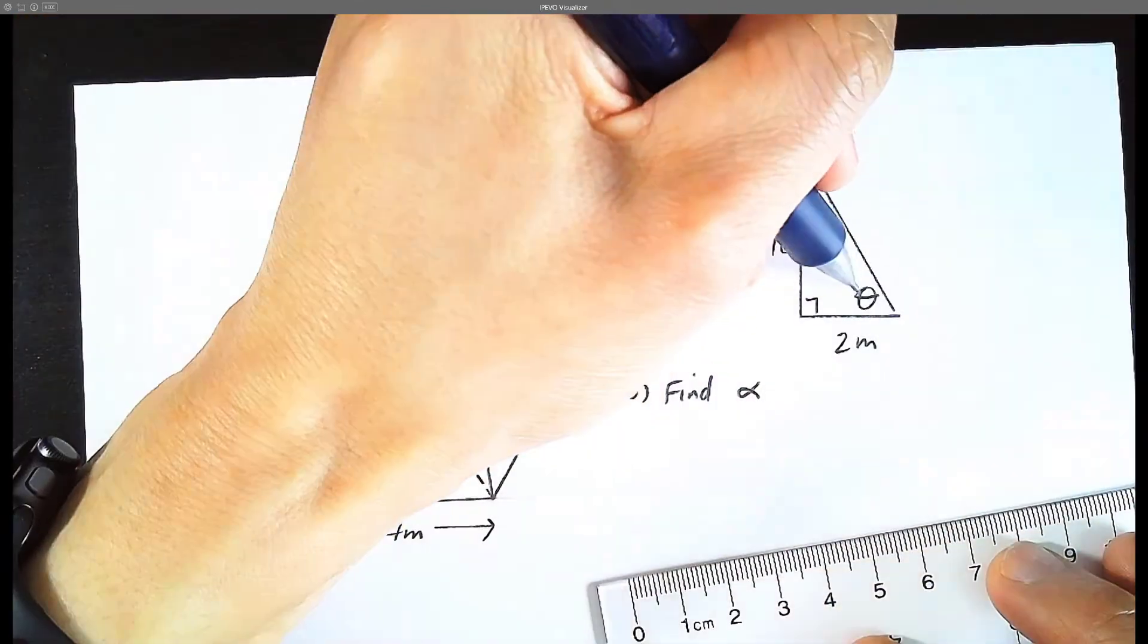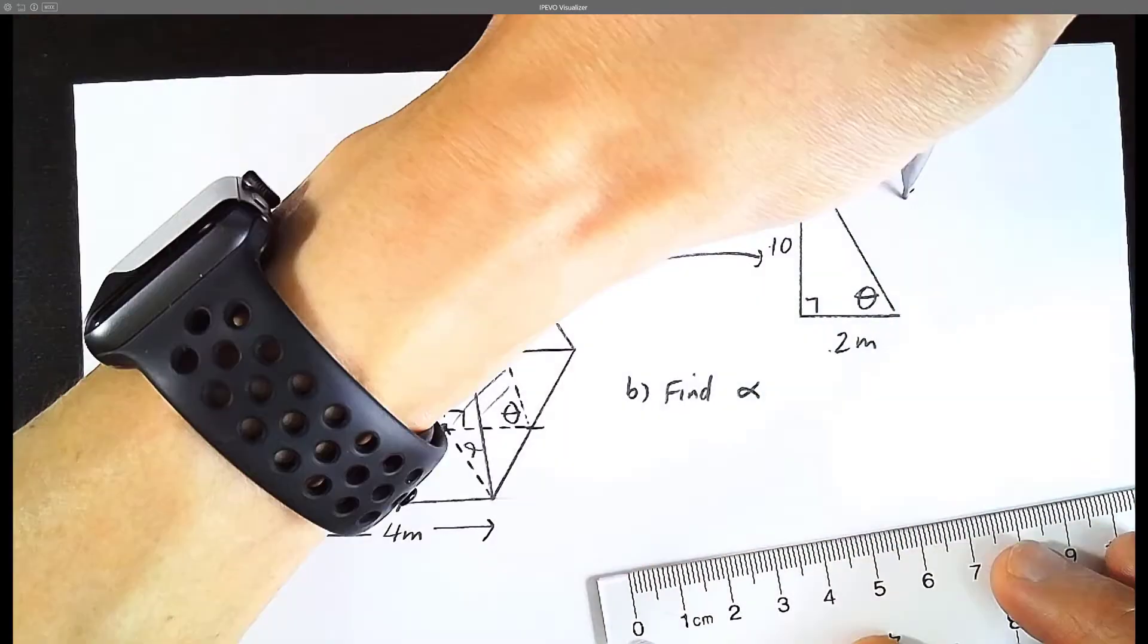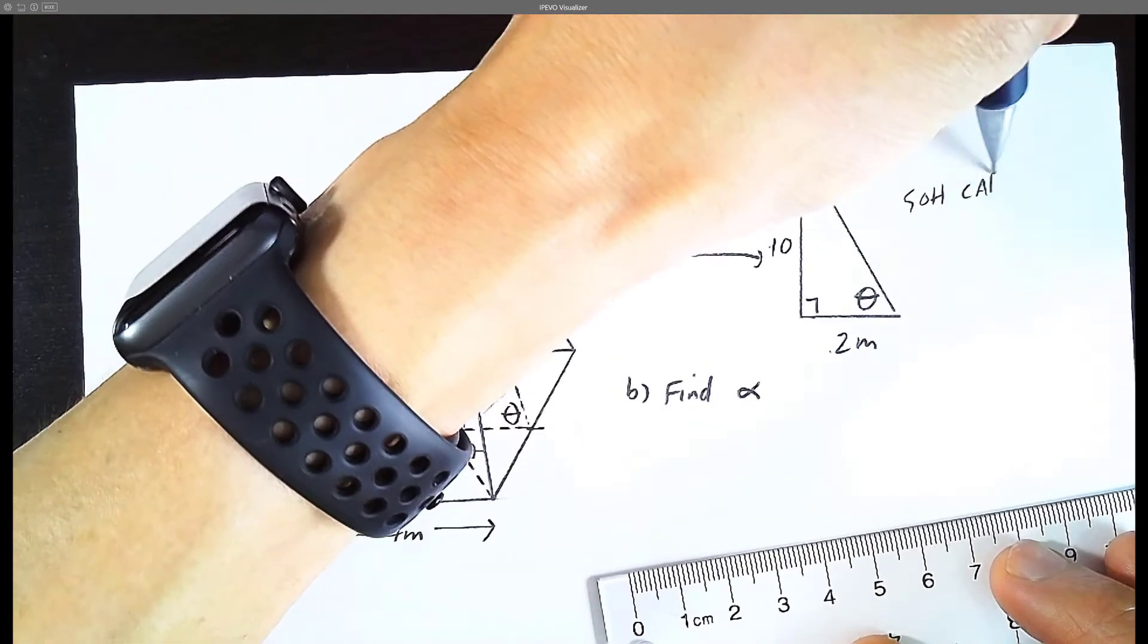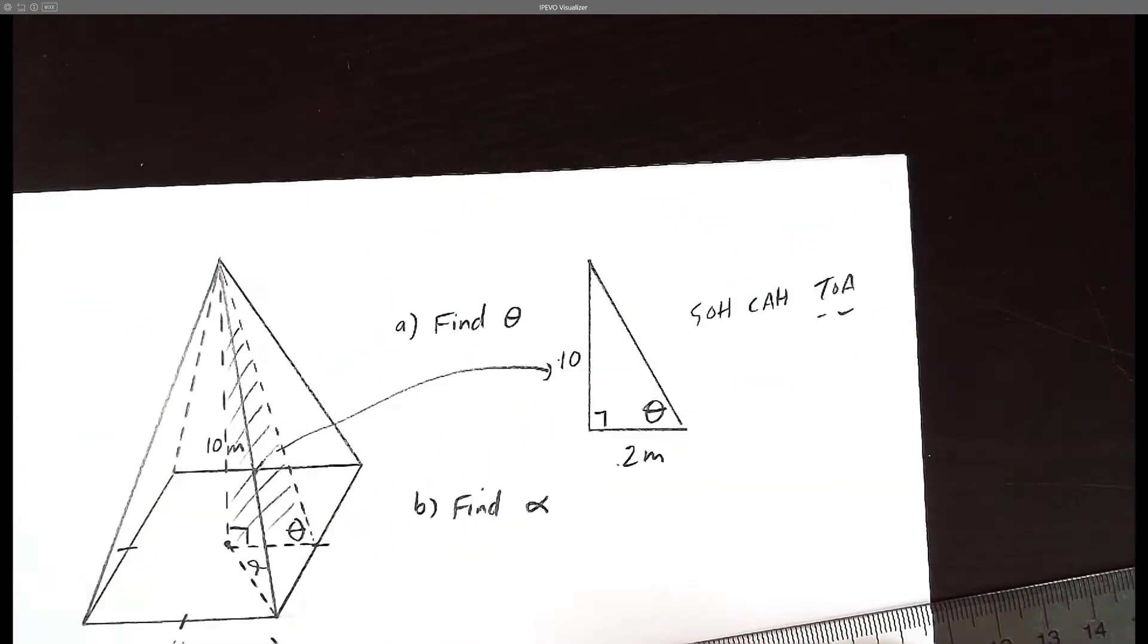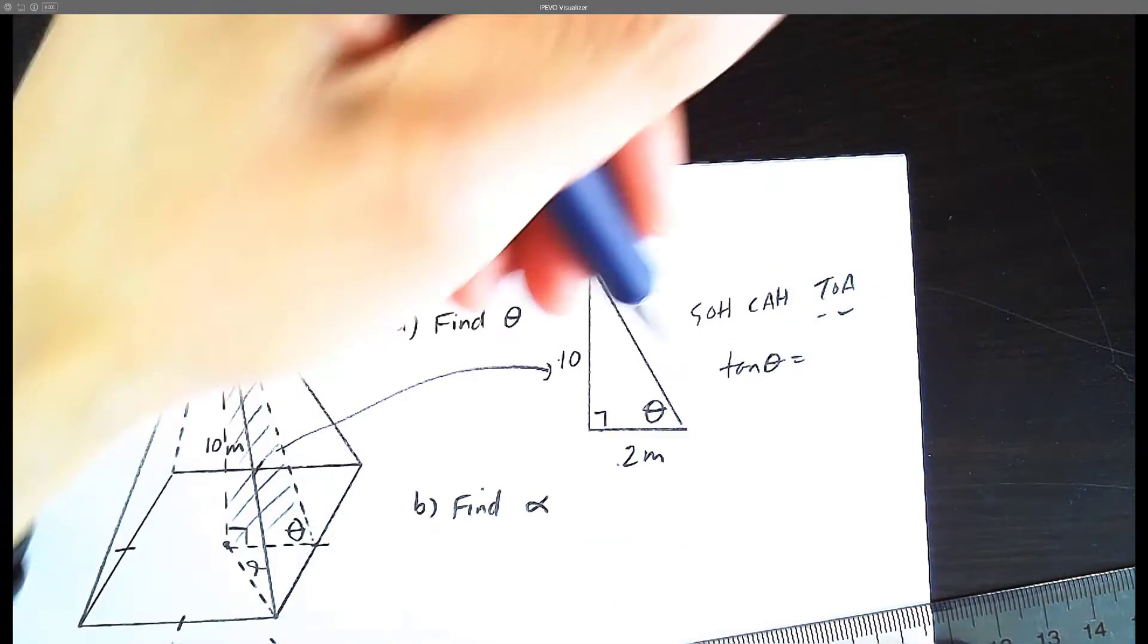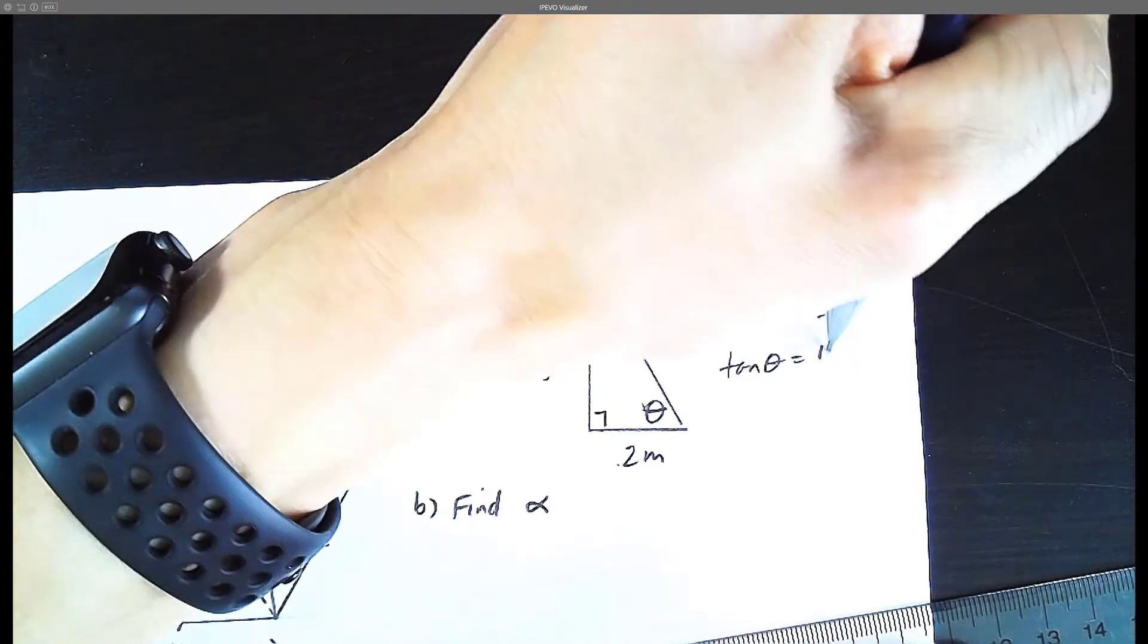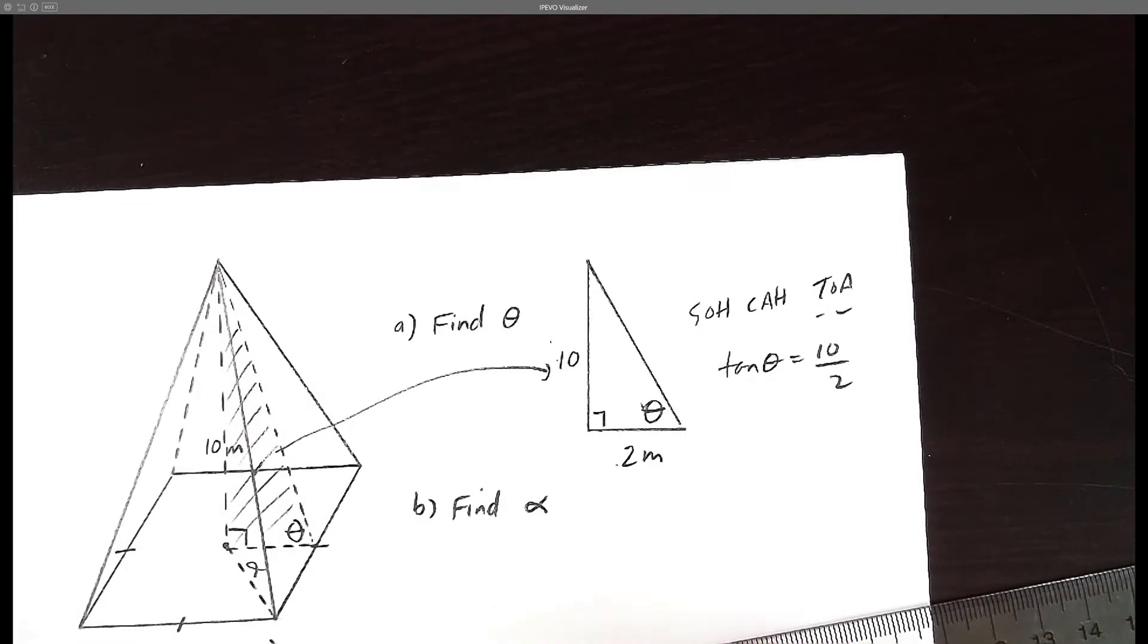So now let's stick our finger on theta. And we're interested in opposite over adjacent. SOH CAH TOA. We're interested in tan. Tan theta equals the opposite, which is going to be 10, over the adjacent, which is going to be 2. 10 divided by 2 is obviously 5, but you can just leave it like that if you want.